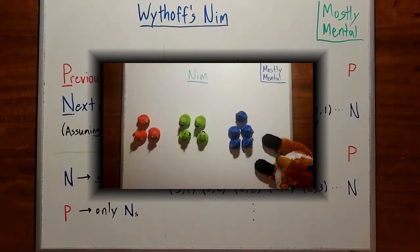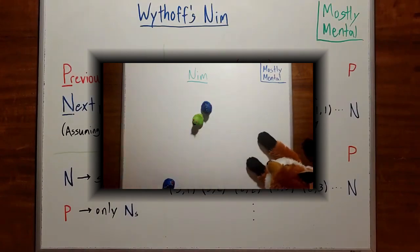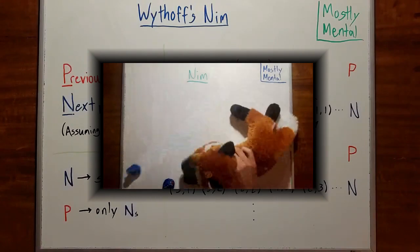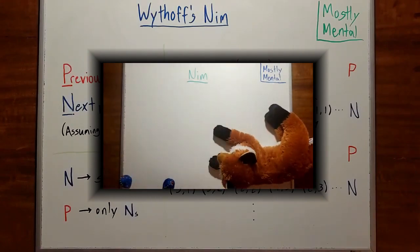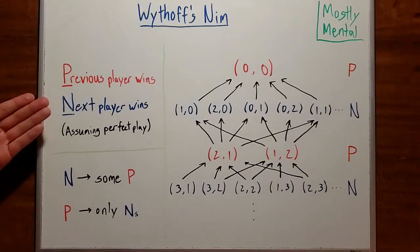In a previous video, Aurora and I played a closely related game called Nim, where you're only allowed to take ducks from one pile or the other, but not from both at once. In studying Nim, we developed a whole theory of impartial games, but for today we'll only need one of our tools. P and N positions.